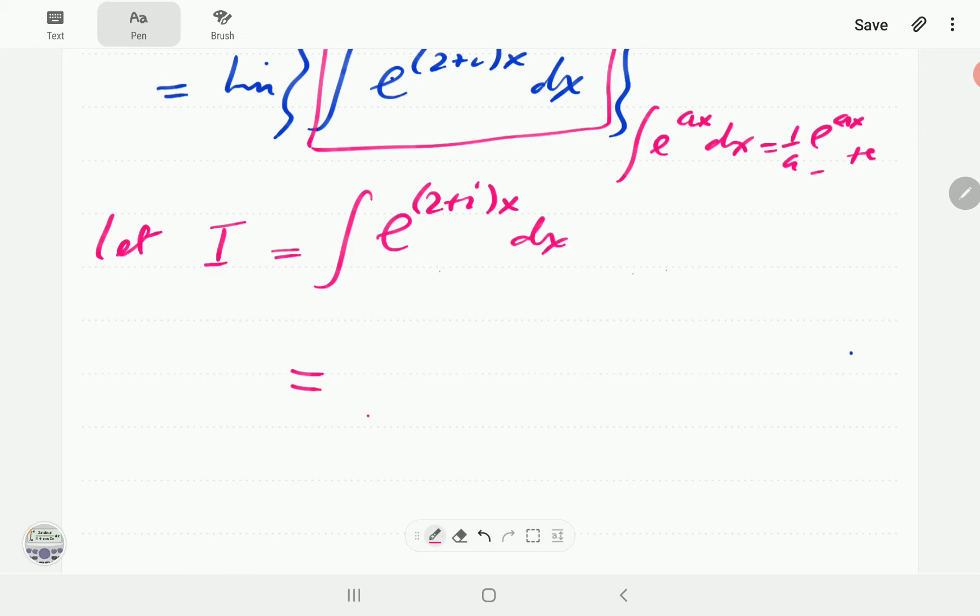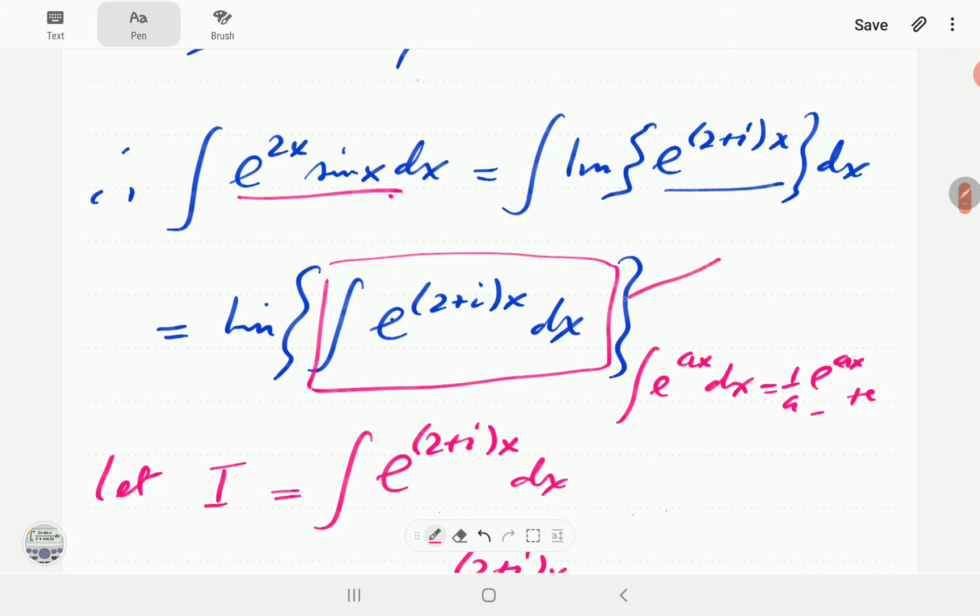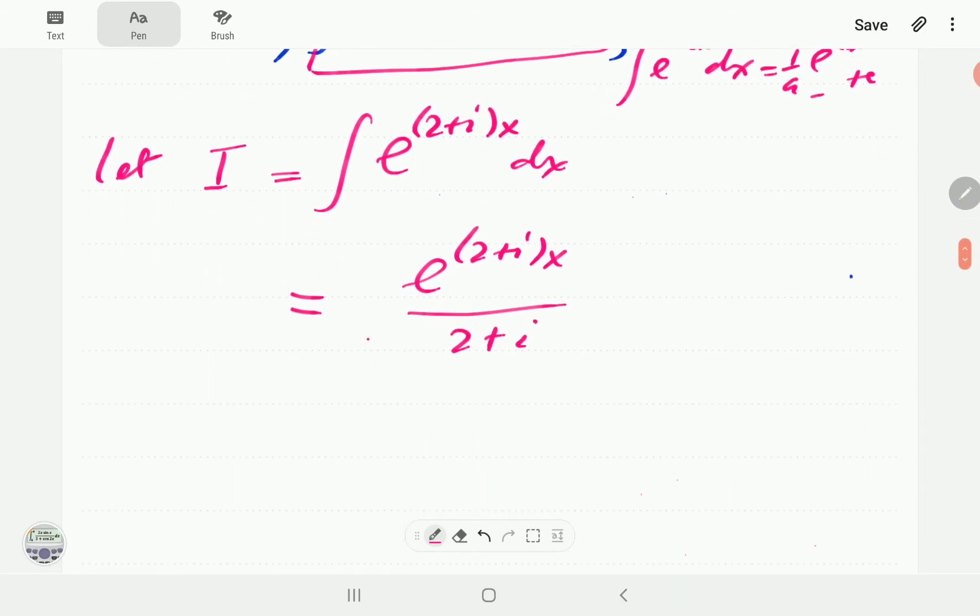In this case, a is 2 plus i. So this thing is going to be e to the 2 plus ix all over 2 plus i and then plus a constant.